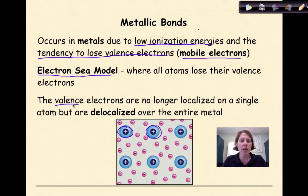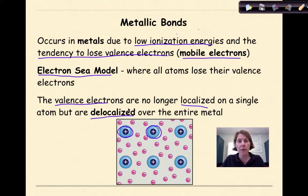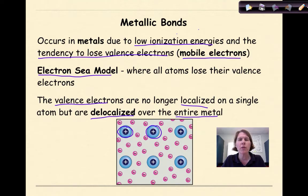As you can see from this diagram, we have a positive nucleus and the idea that these electrons are going to be moving throughout this entire metal substance. The valence electrons are no longer localized on a single atom, but are delocalized — away from their particular atom and moving among other positive nuclei over the entire metal. These mobile valence electrons are what form the bonds between these positive ions.